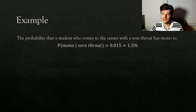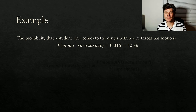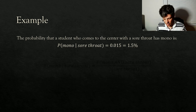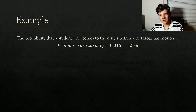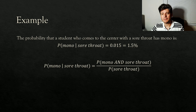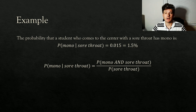So if I'm only concerned about students with a sore throat — that's already my given — that's 9 out of 600 students, or 0.015, or one and a half percent. The probability that a student has mono given they have a sore throat is only 1.5%. Compare that to the other conditional probability: if a student has mono, the probability they have a sore throat is 90%. But if you have a sore throat, the probability you have mono is only 1.5% — much, much smaller.